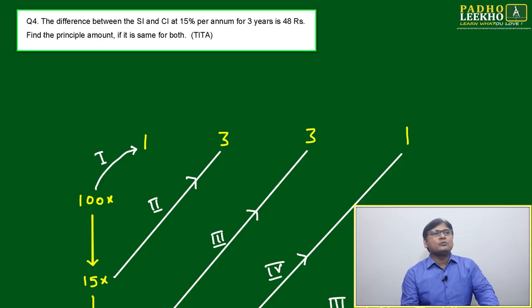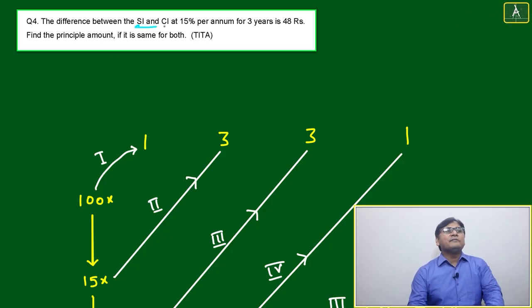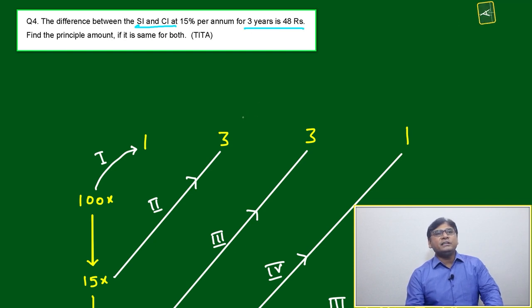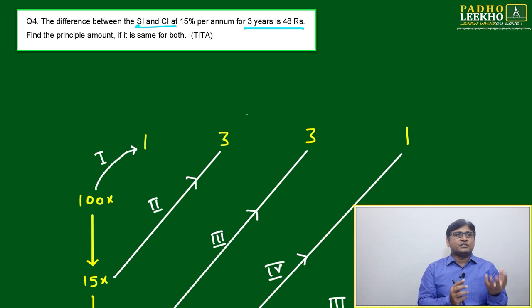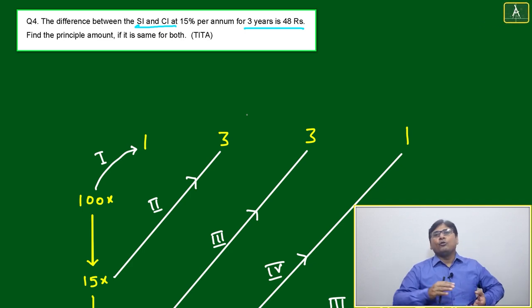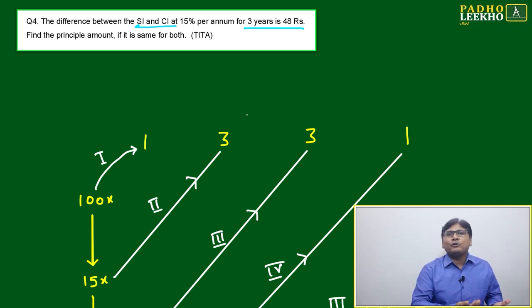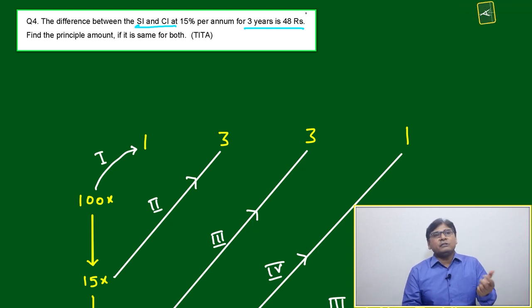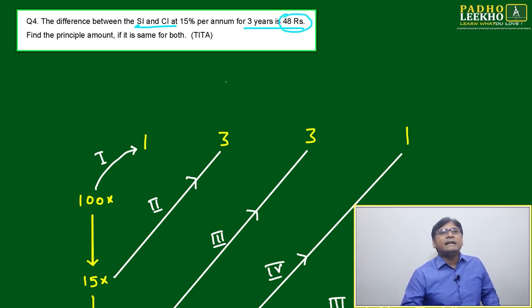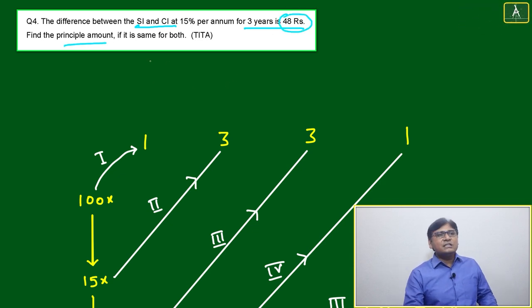Now let's solve this question. The difference between the SI and CI at 15% per annum for 3 years is 48 rupees. If you put the same amount of money for compound interest and simple interest at a 15% interest rate for 3 years, the difference between CI and SI is 48 rupees. The question is: find the principal amount if it is the same for both.